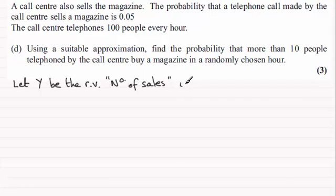Now the number of sales would follow a binomial distribution, so we'll say where Y is distributed binomially and there'll be 100 trials, and the probability that a sale is made is 0.05. And we're being asked to work out the probability that the number of sales is greater than 10.